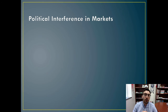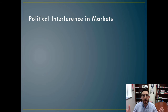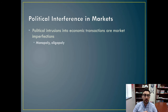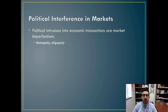But in the real world, we have lots of different kinds of political interference in what would otherwise be free markets. There's no such thing as a completely free market. These political intrusions into economic transactions are market imperfections. They include things like a monopoly or oligopoly, where one or a very small set of producers has complete control over an entire industry.